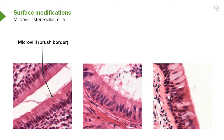Microvilli are often called the brush border, particularly when we talk about tubes in the kidney, or striated borders when we talk about epithelial cells lining the intestinal tract. Another surface specialisation similar to microvilli but much longer are stereocilia.